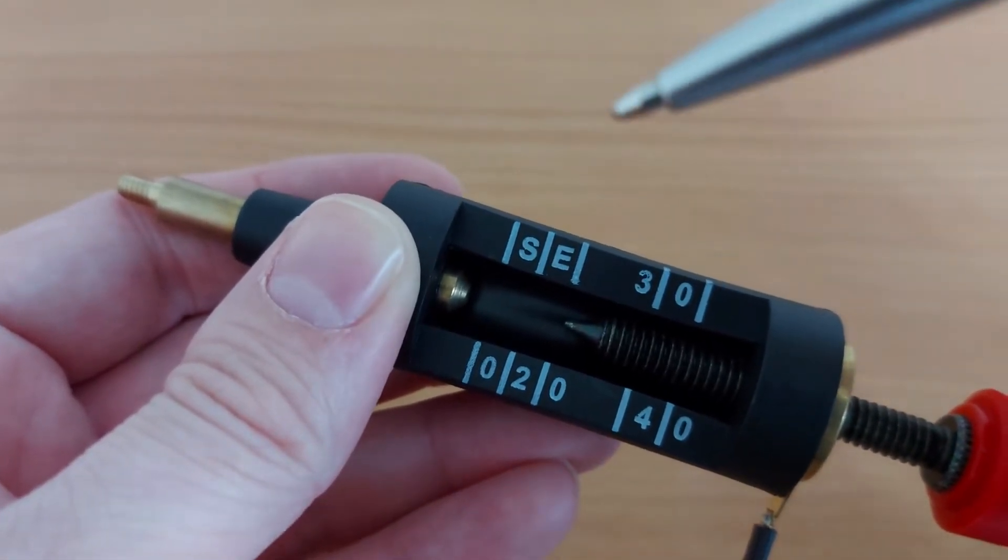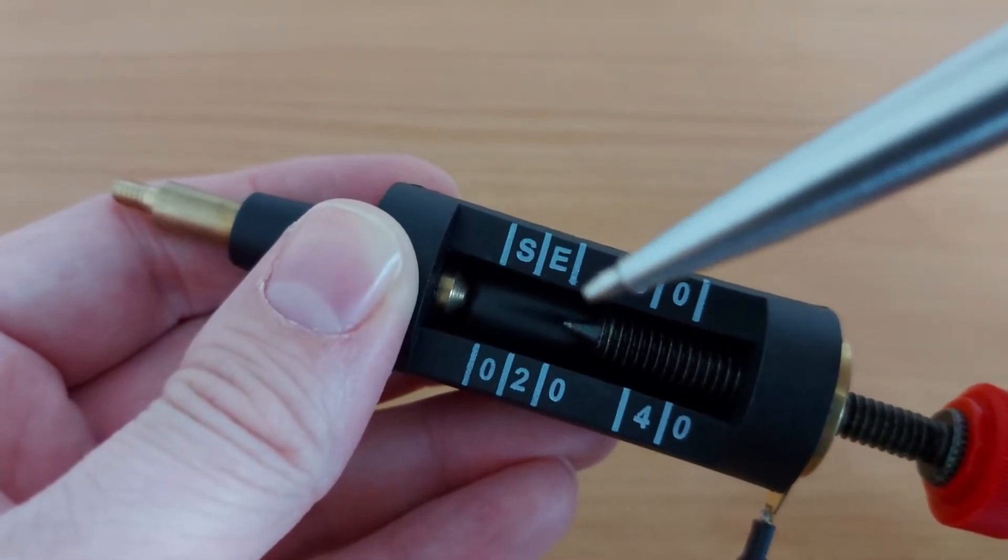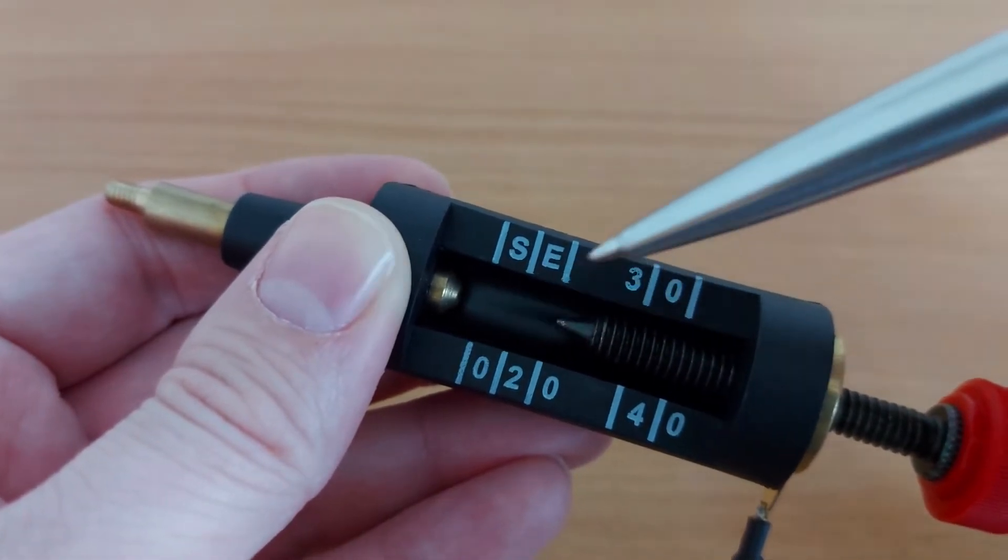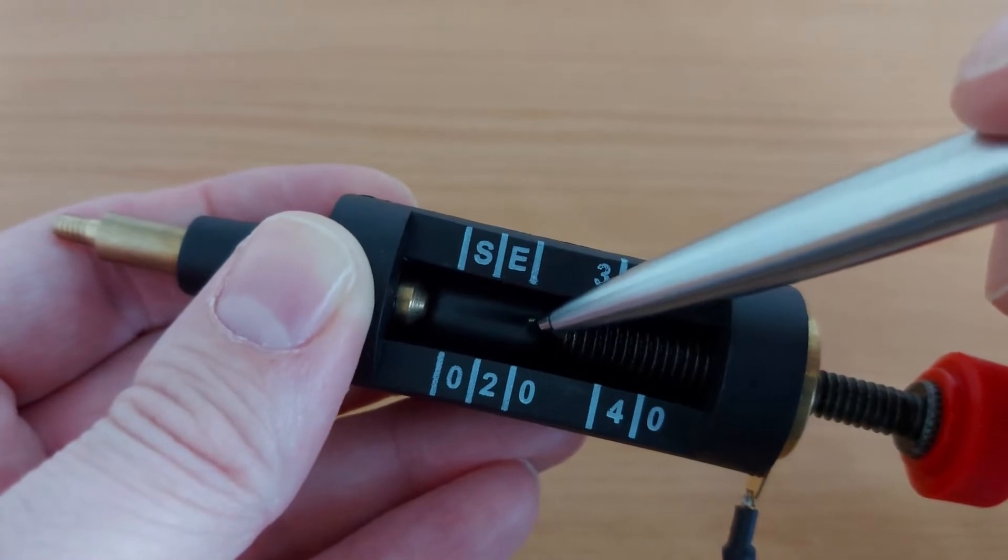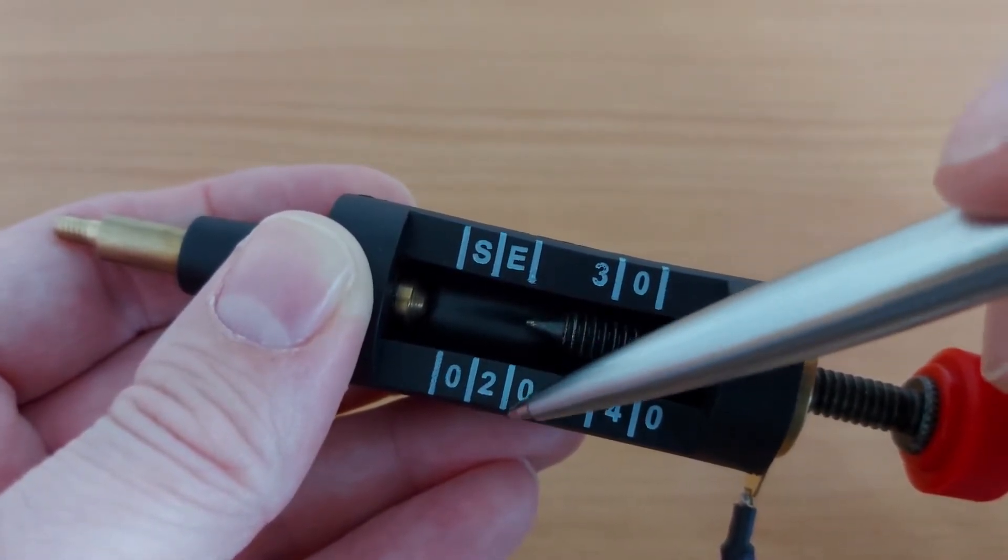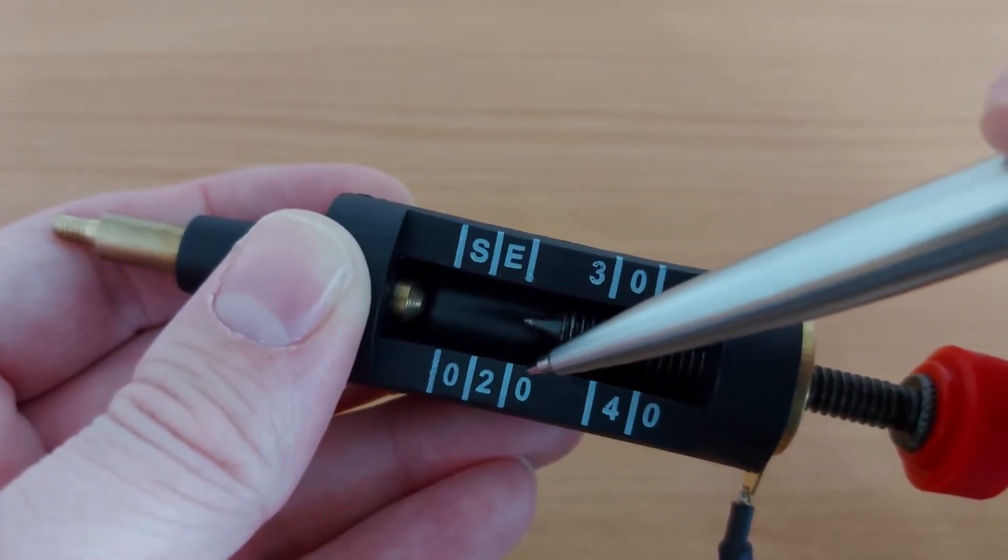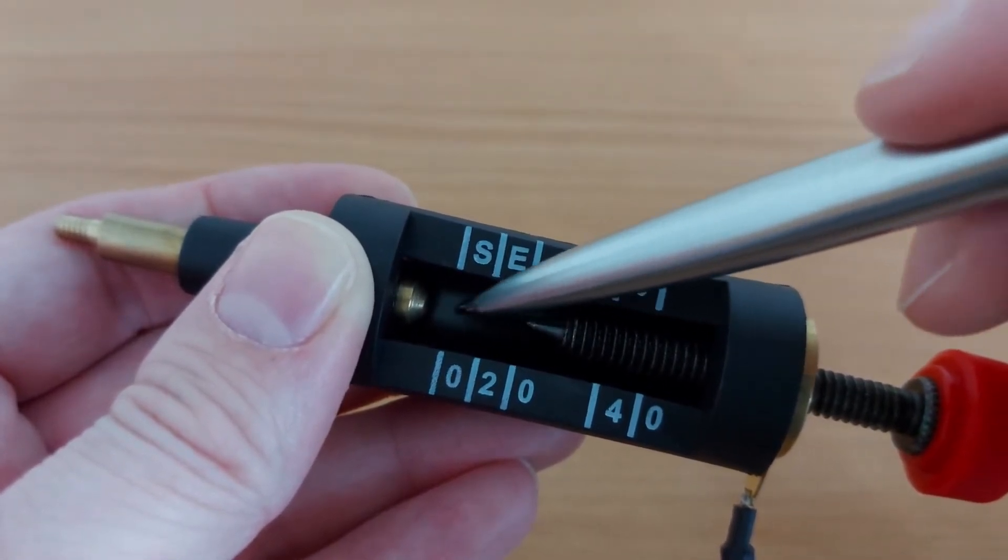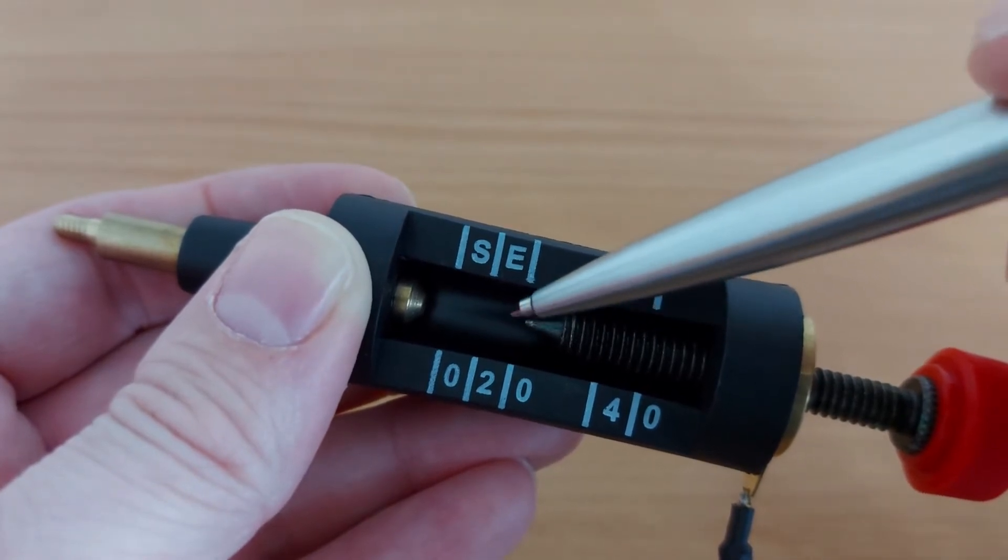Now we can also measure roughly how much electricity the ignition system is producing via this scale here written in white. So if we look here that tip as of now lines up with that 20 and that 20 refers to 20 kilovolts which is equivalent to 20,000 volts and we know that to bridge that gap the car's ignition system has to generate at least 20,000 volts.